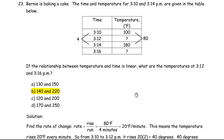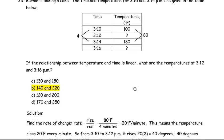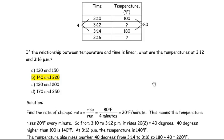So the first thing we're going to do, and we're asked to find if the relationship between temperature and time is linear, what are the temperatures at 3:12 and 3:16 PM. We're asked to find where these two question marks are. So we're going to find the rate, the rate of change.